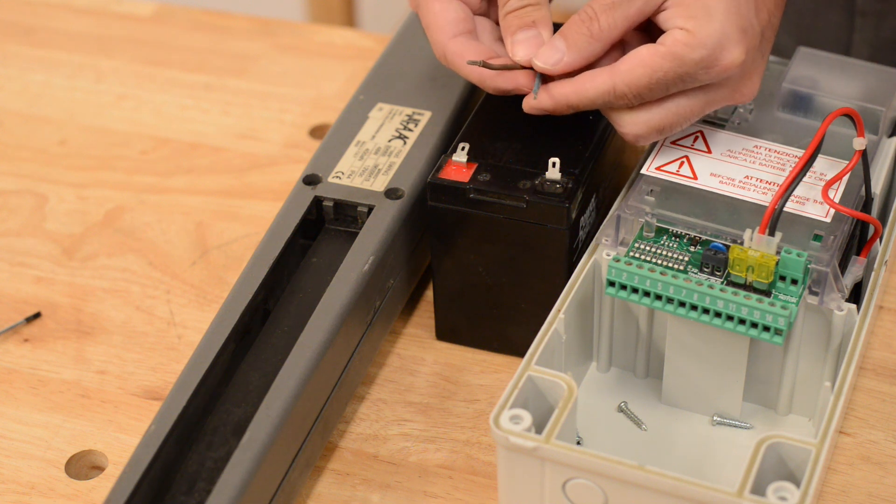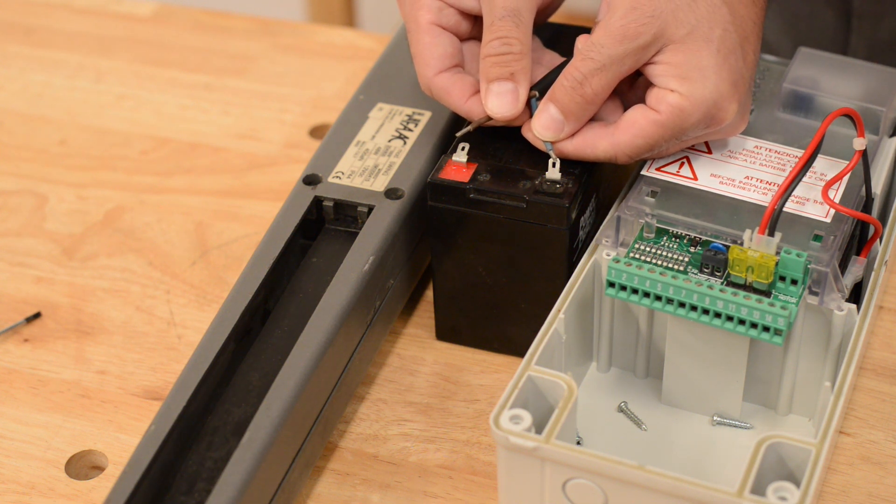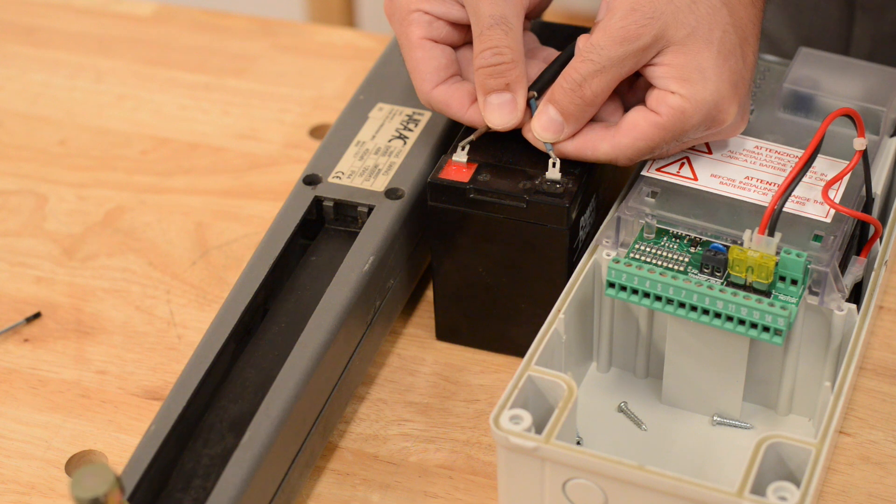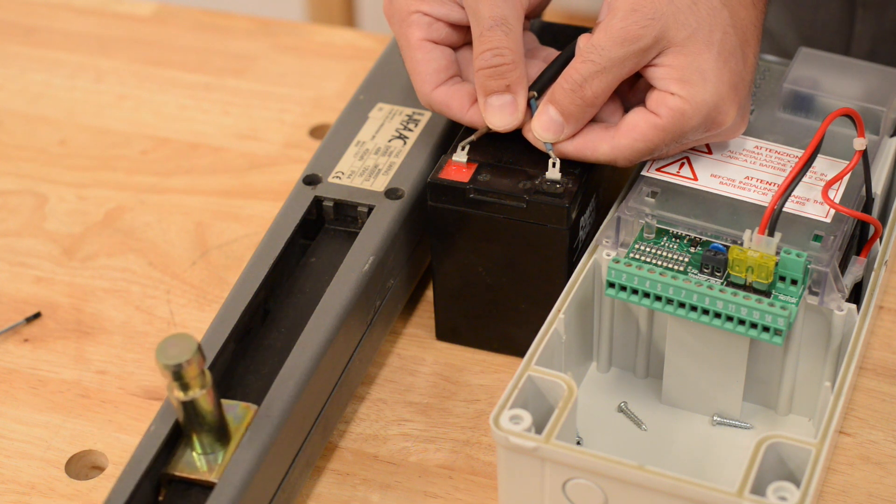If you swap the blue and brown on the positive and negative, you will see the arm move the opposite direction.